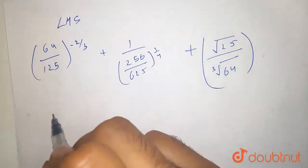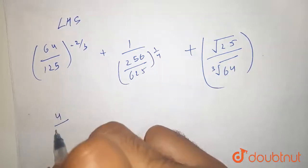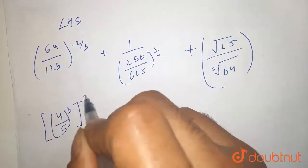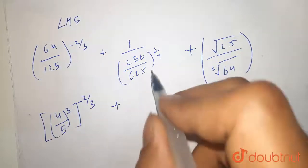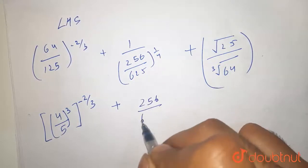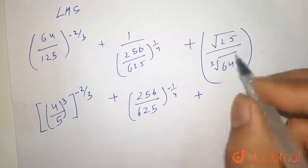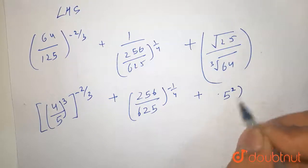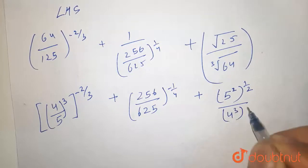Here I can write 64 as 4 upon 5 cube, raised to the power minus 2 by 3, plus here if I reciprocate this, the power becomes minus, so that is 256 upon 625 raised to the power minus 1 by 4, plus here I can write 5 square raised to the power 1 by 2 and 4 cube raised to the power 1 by 3.